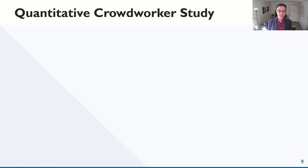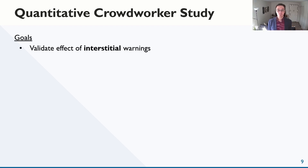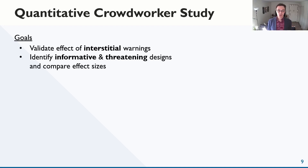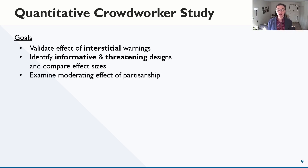Based on these findings, we designed a second study to look more closely at interstitial warnings and examine these different mechanisms of effect. In particular, we wanted to see if the interstitial effect was significant in a larger, more diverse population. We also wanted to create warning designs that evinced two of our effect mechanisms — informativeness and fear of harm — and see if there was a difference in their effects. Finally, we examined the moderating effect of political partisanship on warning efficacy. Political science research suggests that partisanship does affect judgments of information credibility and the efficacy of content warnings.